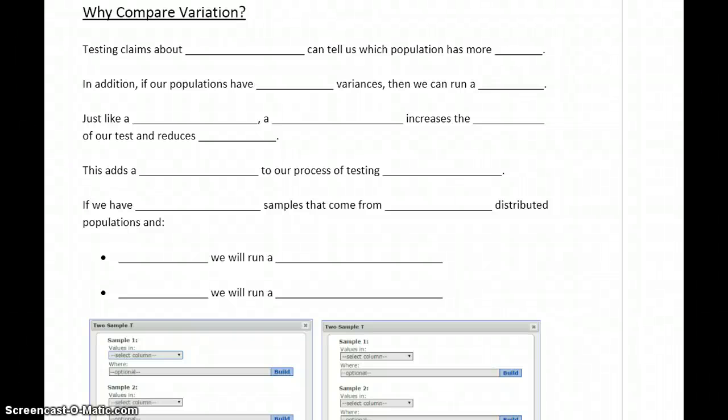When we get to the examples for this section, we're going to look at how we actually conduct the test to compare the variation from two different populations. But an important question is, why do we want to compare variation?